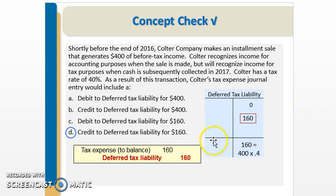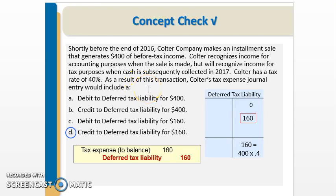Let's do a concept check. Coulter Company makes an installment sale shortly before the end of 2016 that generates $400 of before-tax income. Coulter recognizes income for accounting purposes when the sale is made, but recognizes income for tax purposes when cash is subsequently collected. With a tax rate of 40%, you're in a deferred tax liability situation — paying taxes later. $400 at 40% generates a $160 deferred tax liability. Your journal entry would include a credit to deferred tax liability and a debit to tax expense, which is always the plug.